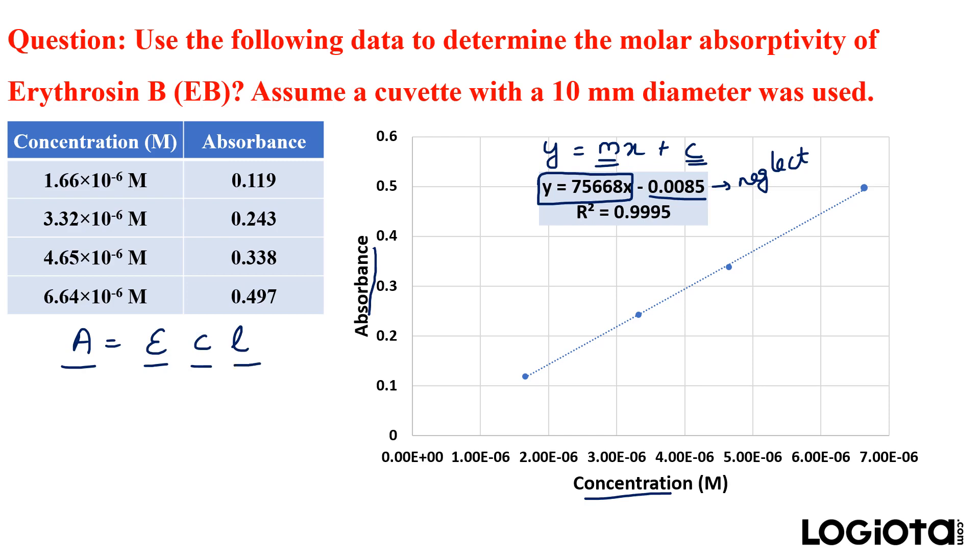Now if we compare this equation with y equals mx you can see that absorbance is the y and c is the x. So we are left with epsilon and l. So that is equal to m. So m equals epsilon l.